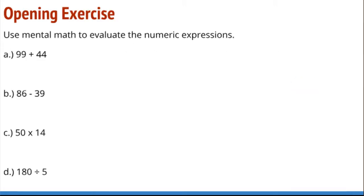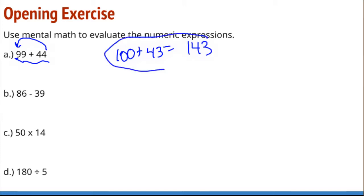Here are some mental math exercises to try out. This is an addition problem — we can do some compensation. We can take 1 from the 44 and make it 43, then move that 1 over to the 99 to make 100 plus 43, and we get 143. That's a nice compensation strategy for addition.